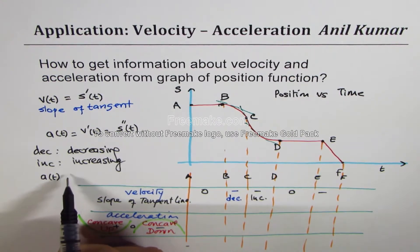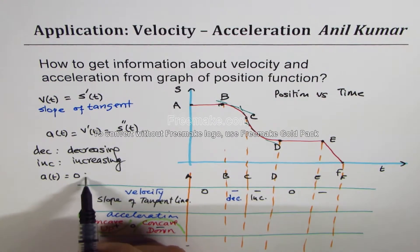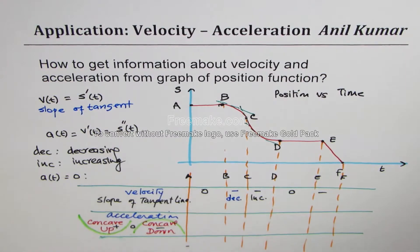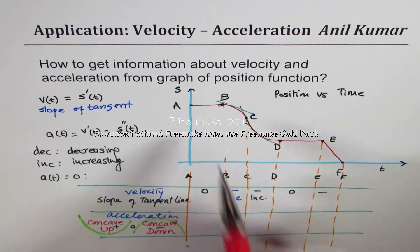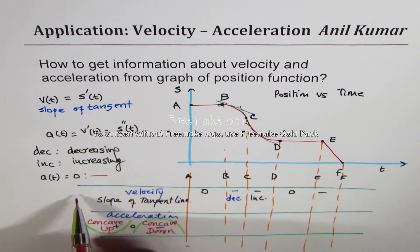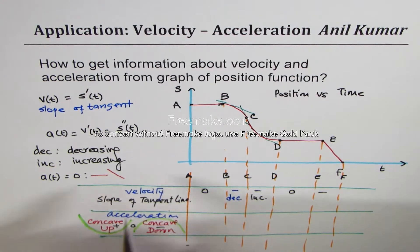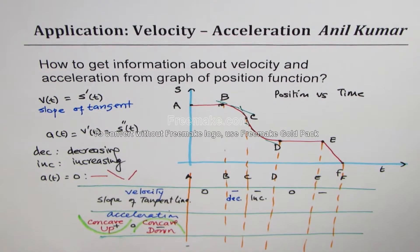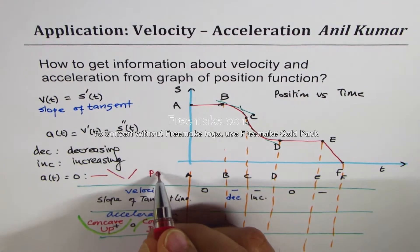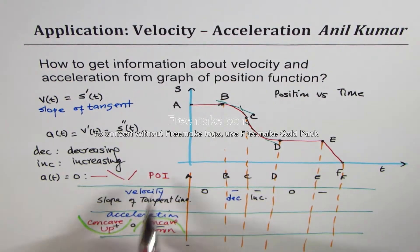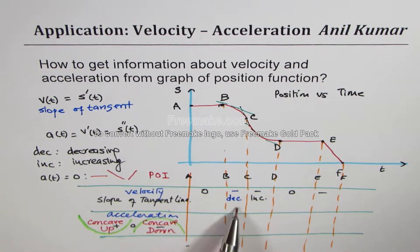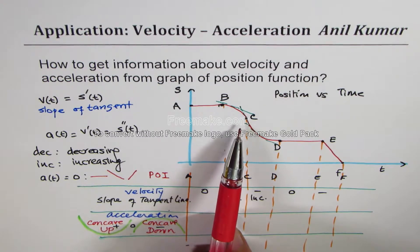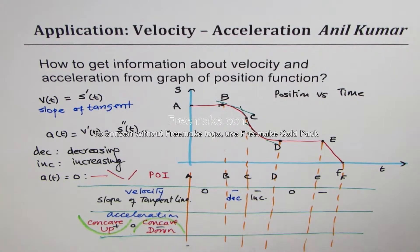Acceleration will be equal to zero under three conditions: when we have a straight line (horizontal, positive slope, or negative slope), or when we have a point of inflection. These are the conditions when we will have zero acceleration. Before we get into intervals, let's identify some points which are very important and critical.